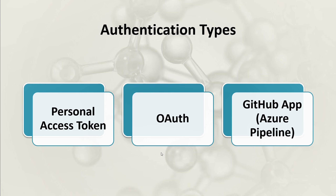The next authentication method is OAuth authentication, whose full form is open authorization. OAuth works on a token-based system where tokens are exchanged between the source and the target, and based on that, authorization happens. This is slightly better than personal access token because once a service connection is created using a personal access token, the token cannot be rotated. However, with OAuth you can rotate your secrets, providing a better authentication method. But the drawback is also similar — this authentication method is tied to your user account, meaning if your user loses access to the repository or GitHub account, your pipeline will start failing.